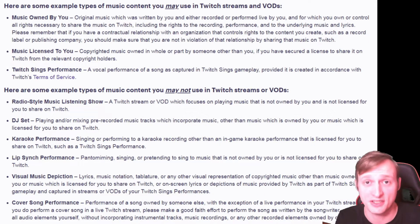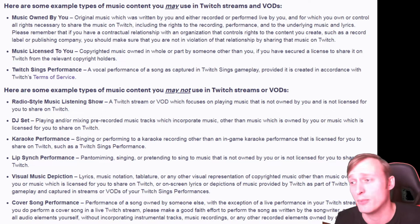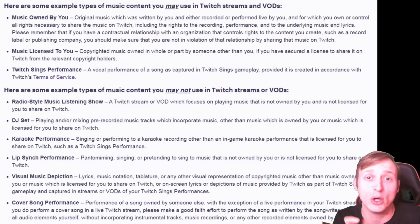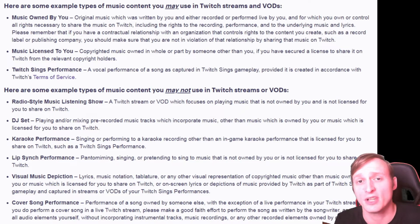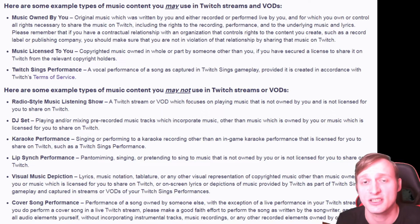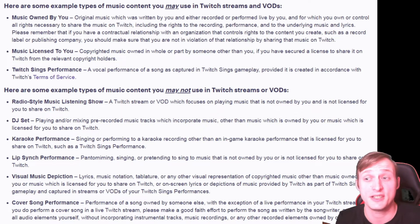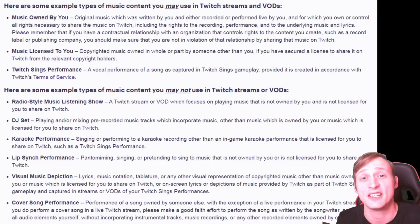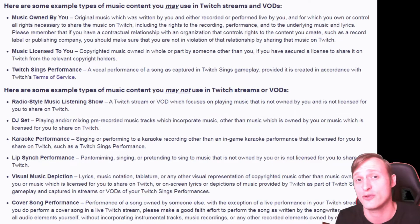You can do music licensed to you — if you have authorisation from the artist to play that music you can use it on your stream. There are also some websites out there, and Spotify has a list of over 500 tracks which are licensed for you to use on Twitch. I'll drop some links below so you can have a look at those. And finally you can do Twitch Sings performances — that program is fully licensed to be used on Twitch, so any tracks within that you can sing on stream.